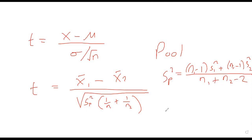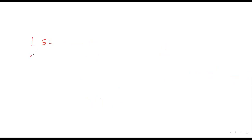Now I'll take you briefly through how we read a T-table. A T-table is read using two simple steps. Number one, you need to identify your level of significance. Number two, you divide by half if it's a two-tailed test, or multiply by two if it's a single-tailed test.